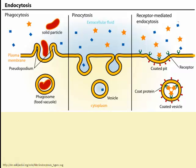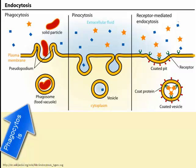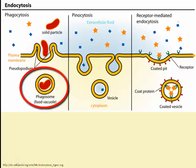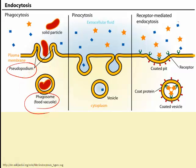There are three types of endocytosis. Phagocytosis, nicknamed cell eating, is endocytosis of solid particles. Pseudopods form around the particles and a food vacuole forms. The vacuole fuses with a lysosome, and the lysosome releases hydrolytic enzymes into that vacuole, which digests the particle.